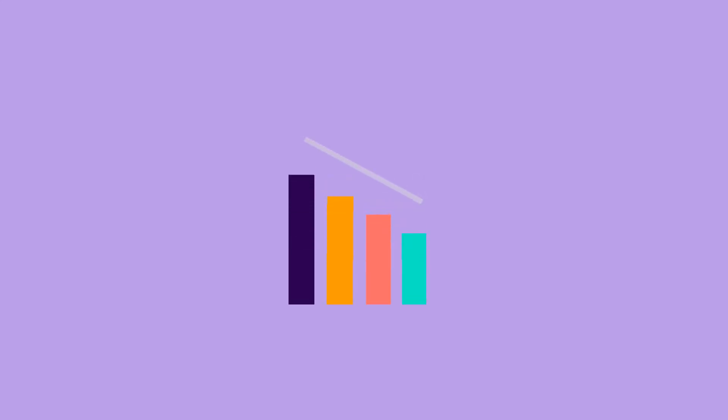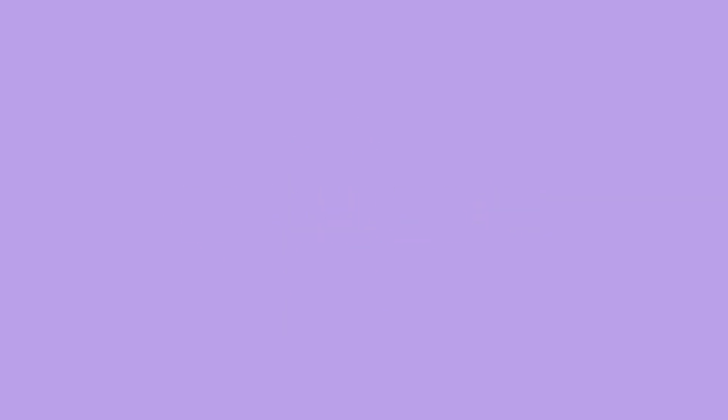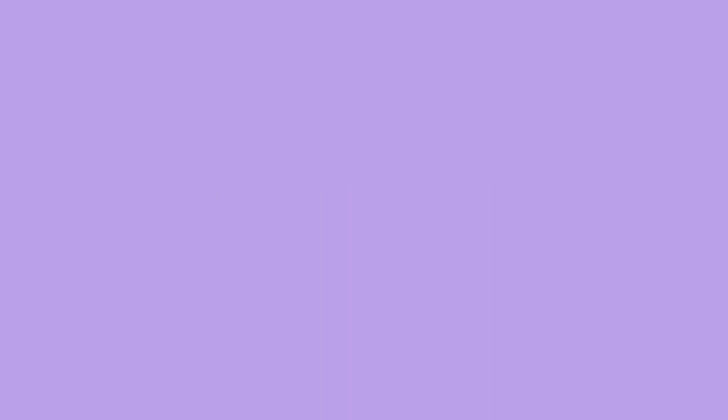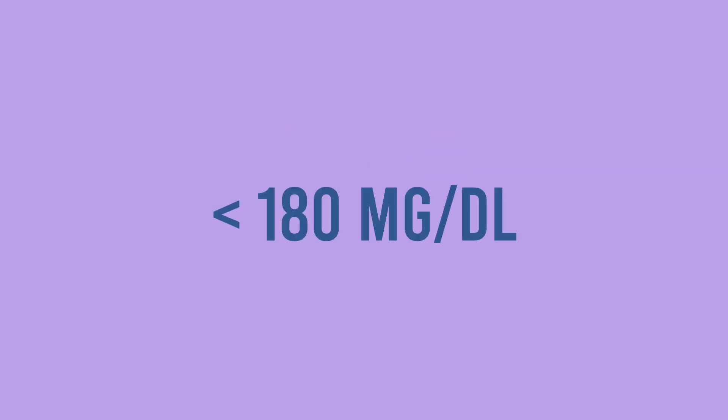The normal levels of glucose have different ranges before and after eating. A healthy range of 90 to 130 milligrams per deciliter should be retained before eating, and after an hour or two, it should be less than 180 milligrams per deciliter.